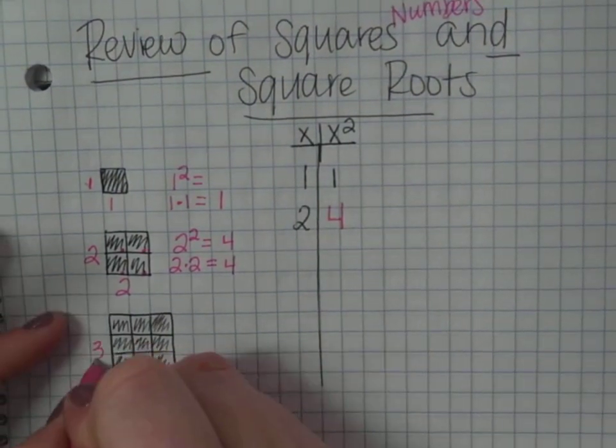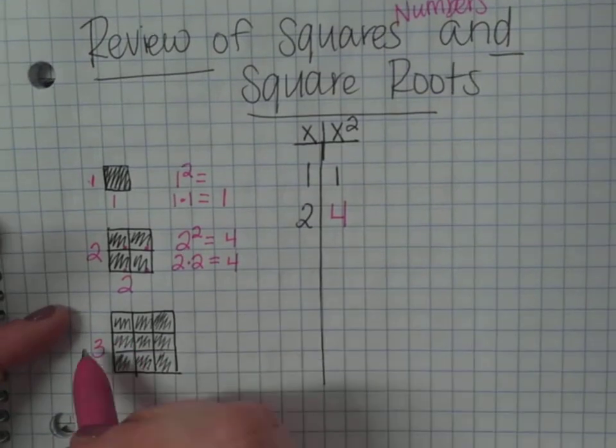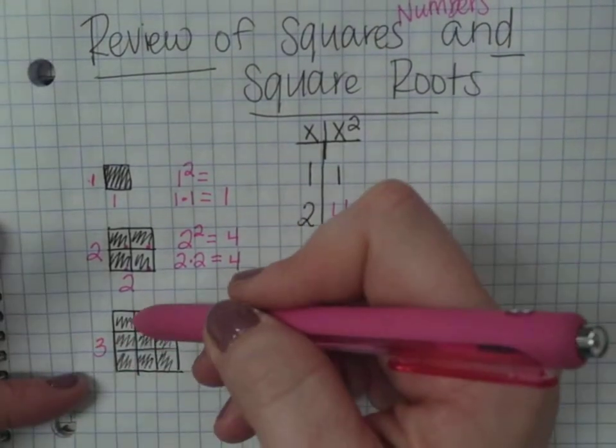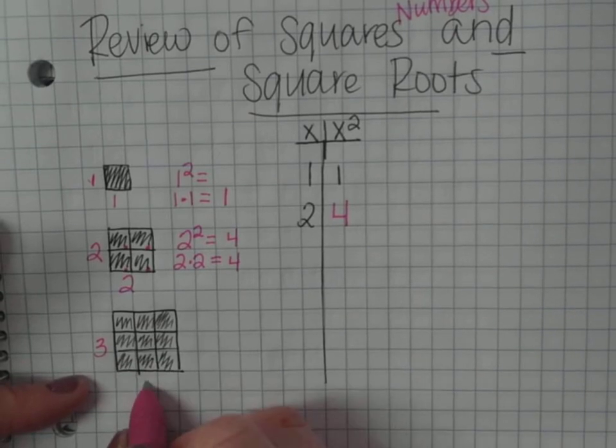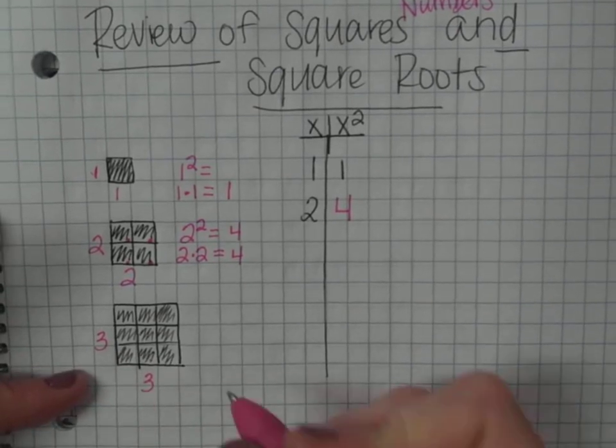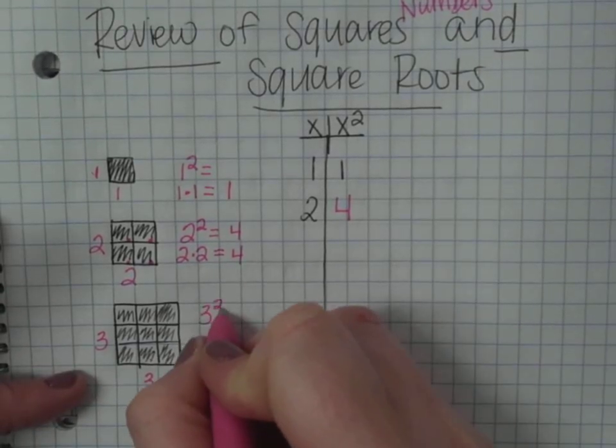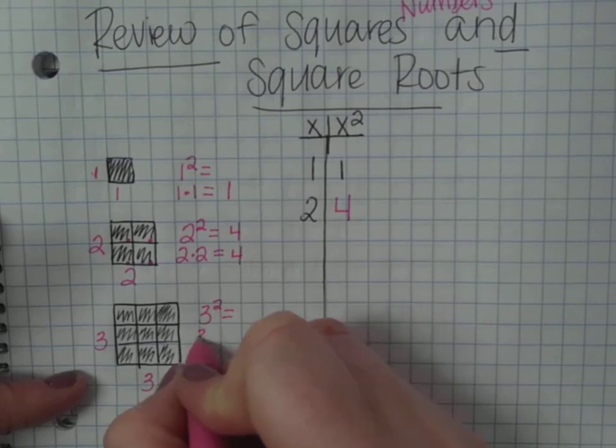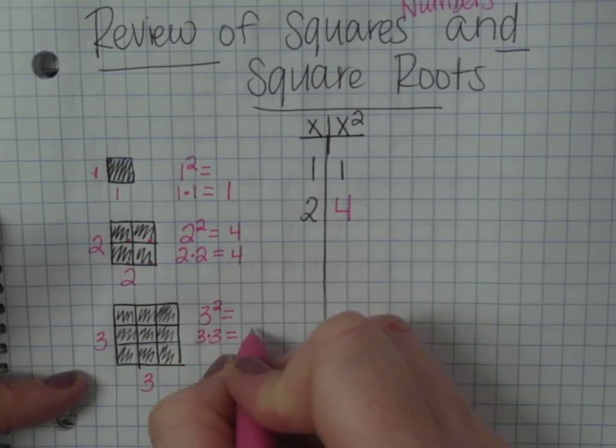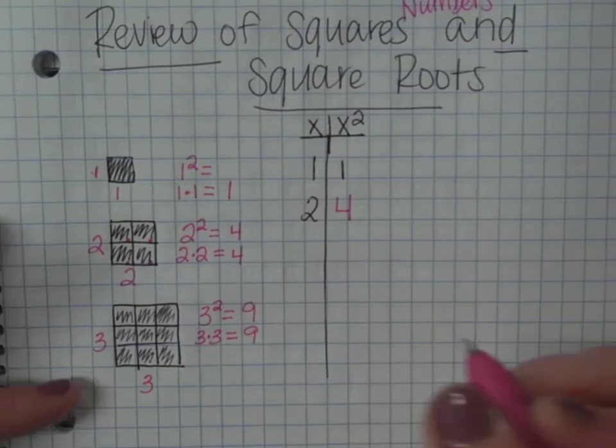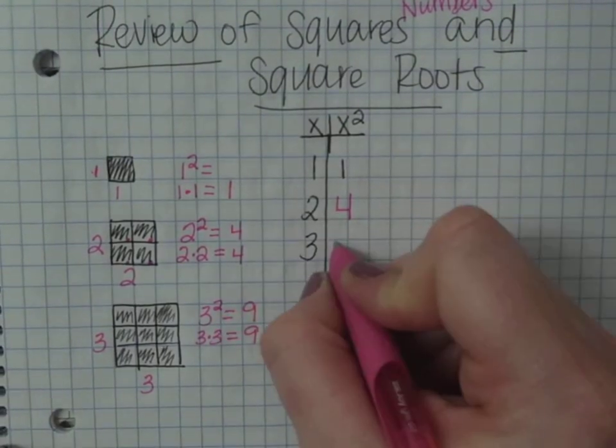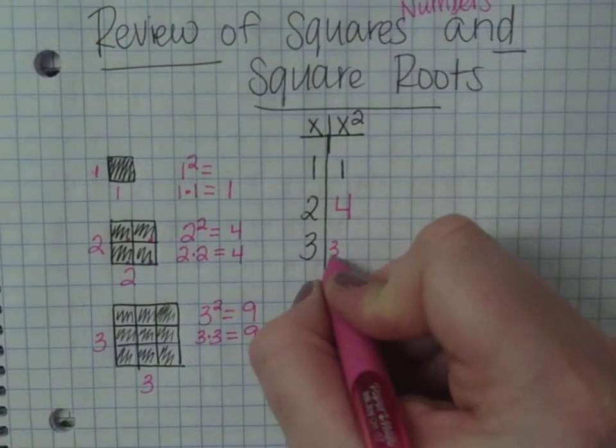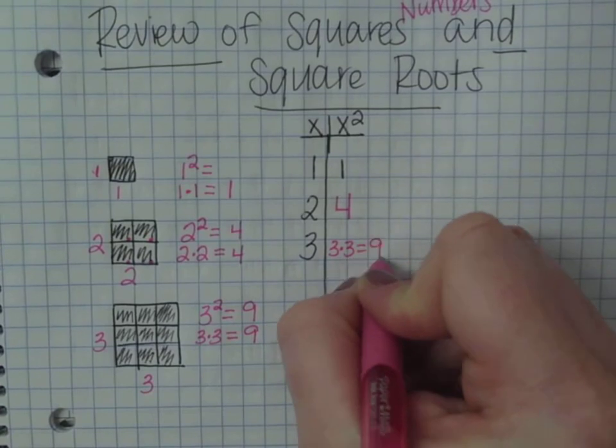3 squared, or remember squared, so if we square a number and it's 3 tall, then it would have to be 3 wide. So it would be 3 times 3, or 3 squared. 3 squared, or 3 times 3, equals 9. So if I take 3, and I square it, 3 times 3 equals 9.